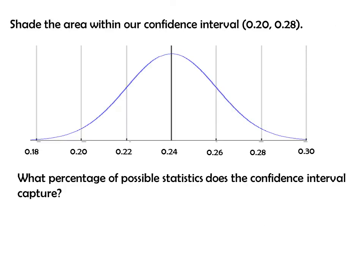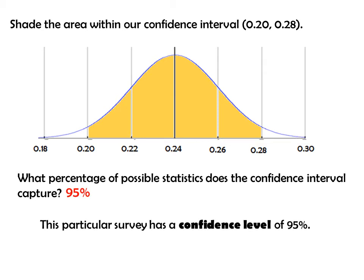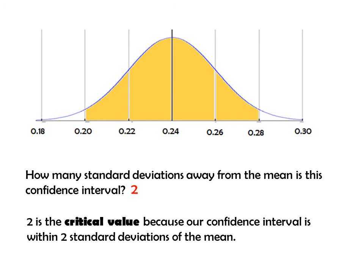Let's shade the area within our confidence interval from 20% to 28%. What percentage of possible statistics does the confidence interval capture? From the empirical rule, the percentage between 0.20 and 0.28 is approximately 95%. So this particular survey has a confidence level of 95%. How many standard deviations away from the mean is this confidence interval? Since we're going 95%, that's within two standard deviations of the mean. Two is called the critical value.